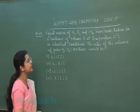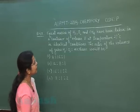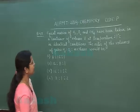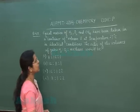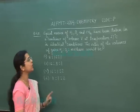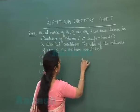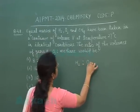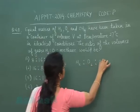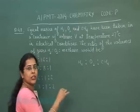Equal masses of hydrogen, oxygen, and methane have been taken in a container of volume V at temperature 27°C in identical conditions. The ratio of the volumes of gases hydrogen, oxygen, and methane would be?